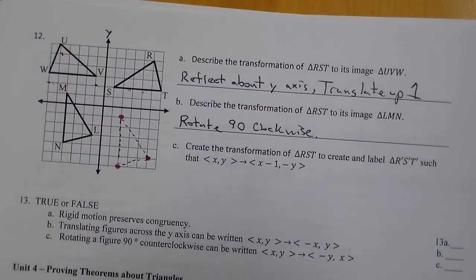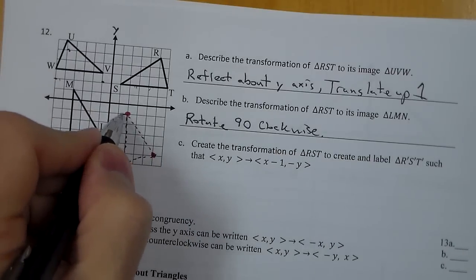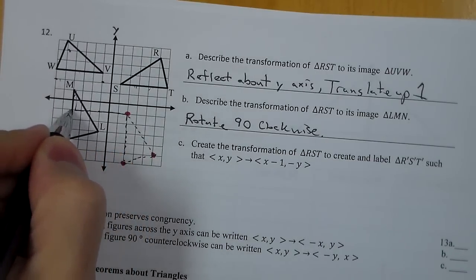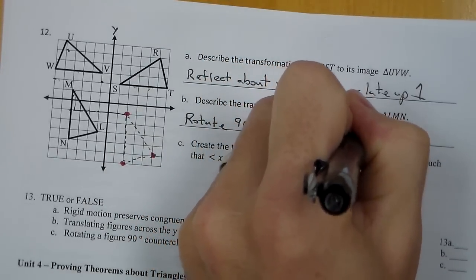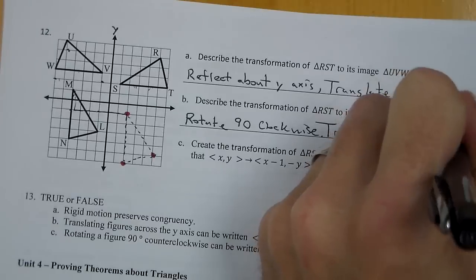Now I'm going to translate. So if I look to translate, I want to take this point to M. So I want to go over and up. Looks like I'm going to go over 1, 2, 3, 4, 5, 6, up 2. So translate left 6, up 2.